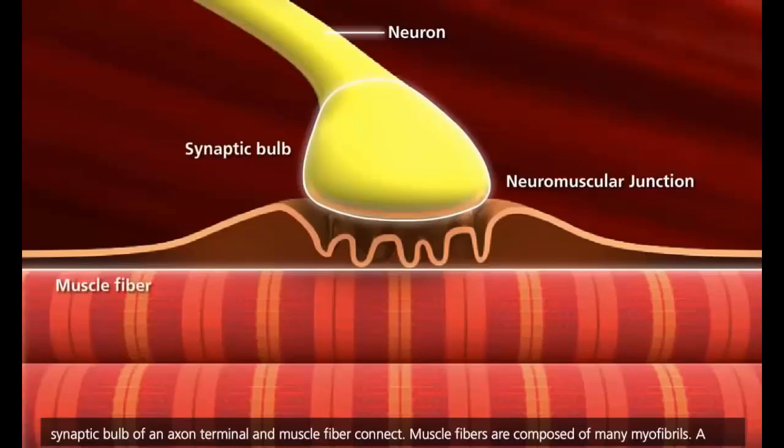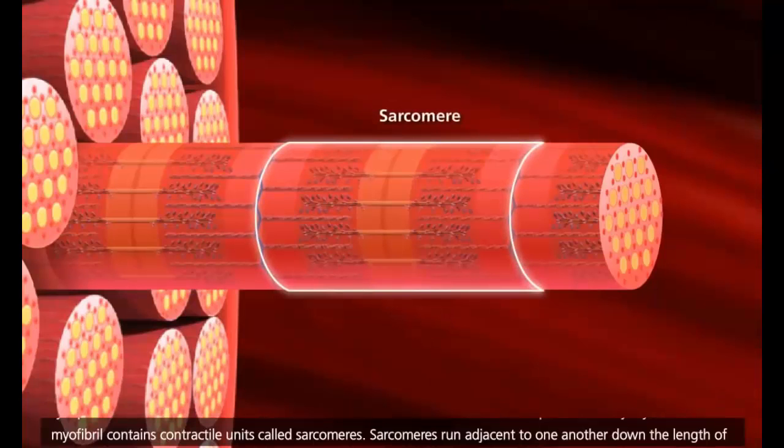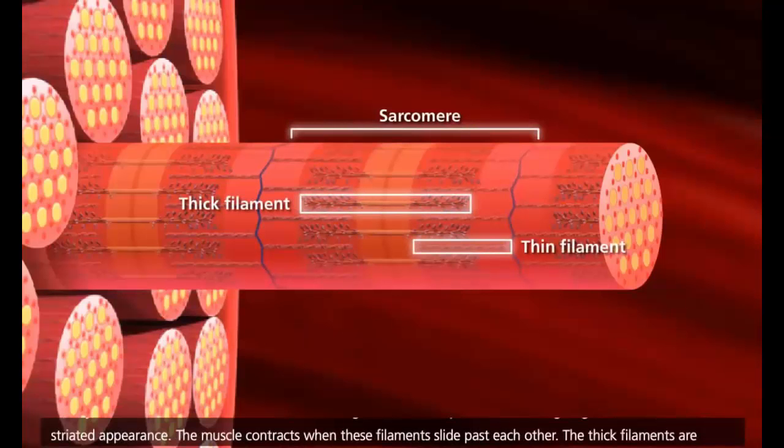Muscle fibers are composed of many myofibrils. A myofibril contains contractile units called sarcomeres. Sarcomeres run adjacent to one another down the length of the myofibril. Each sarcomere consists of alternating thick and thin protein filaments, giving skeletal muscle its striated appearance. The muscle contracts when these filaments slide past each other.